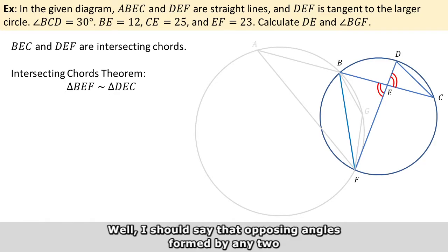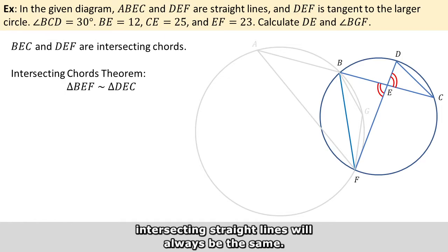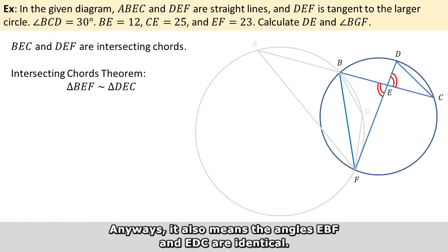Well, I should say that the opposing angle formed by any two intersecting straight lines will always be the same.